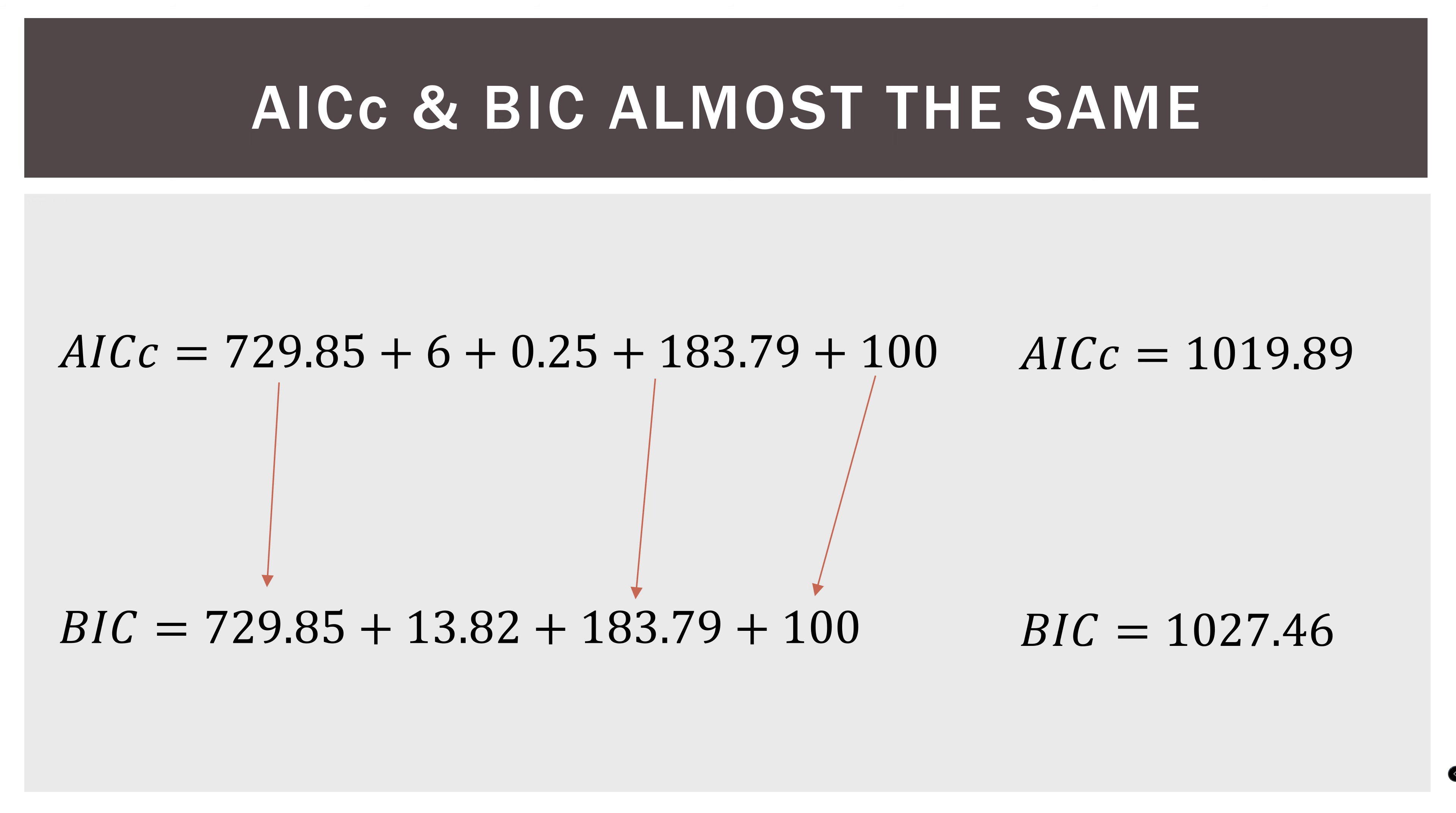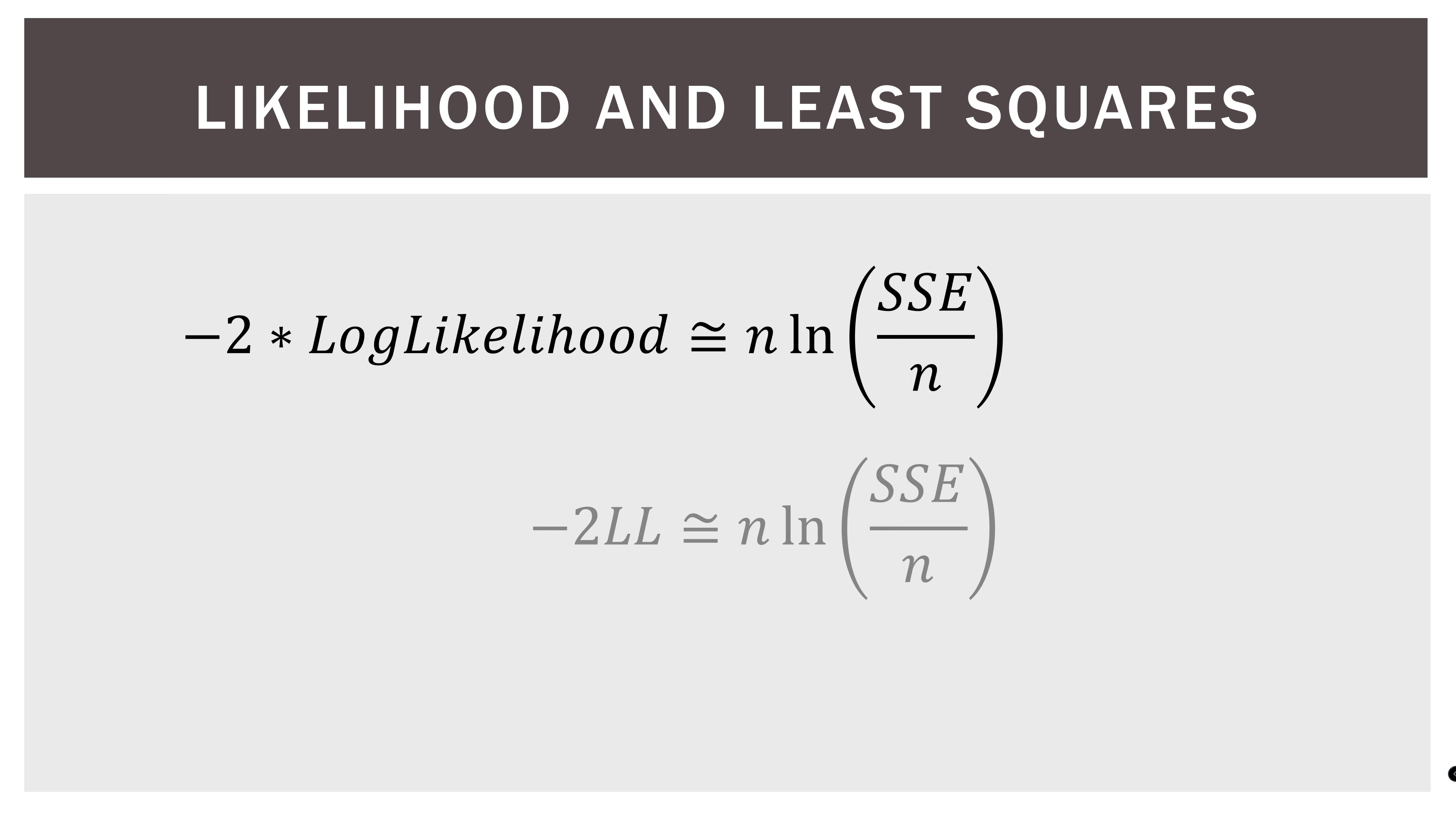So you'll notice this term that appears in all of these formulas. It's the negative 2 log likelihood. And if you go back and look at those formulas again, you will notice that that is in the place of this other term, which is N times the natural log of SSE divided by N. So in one version of the formulas, you'll have negative 2LL. In the regression special case formulas, you'll see this term over here on the right. So we can say that the negative 2 log likelihood is about the same as this term over here on the right.